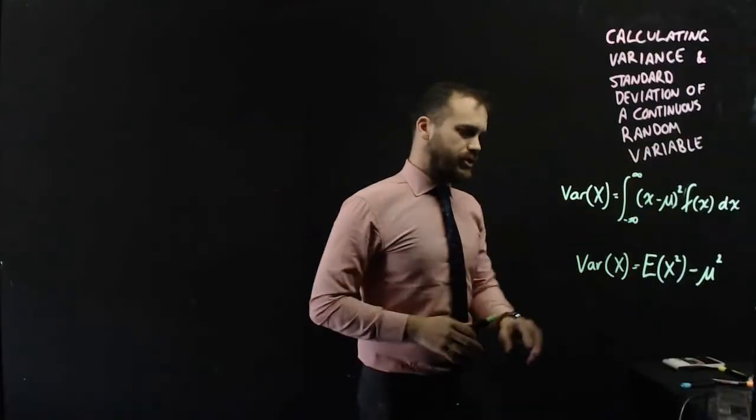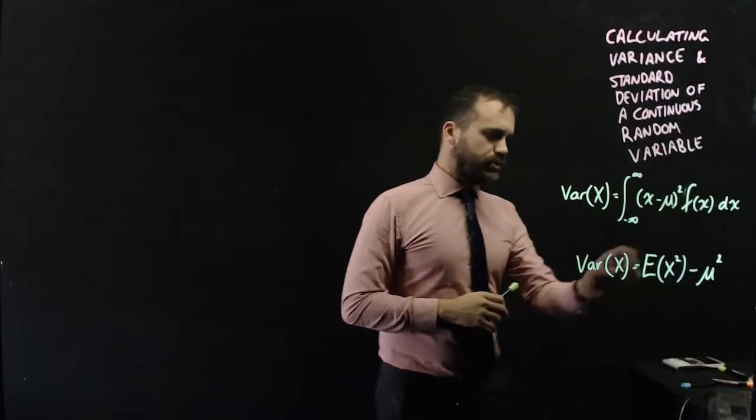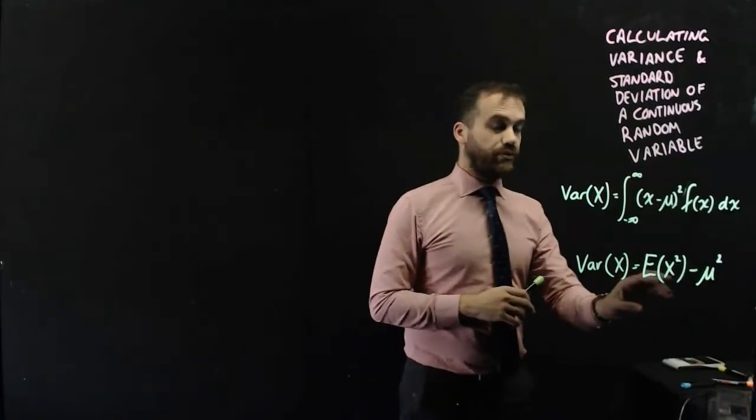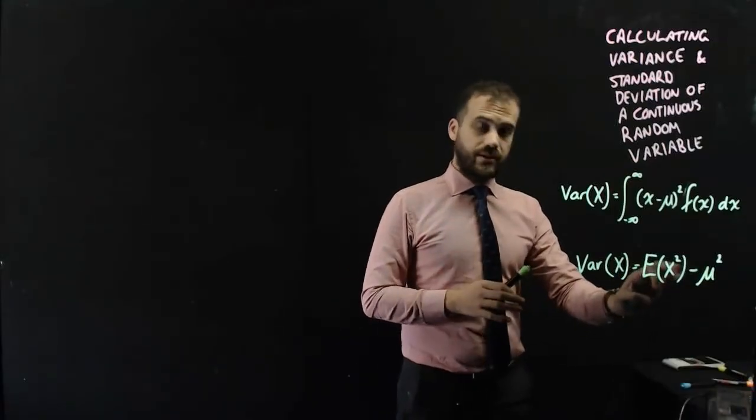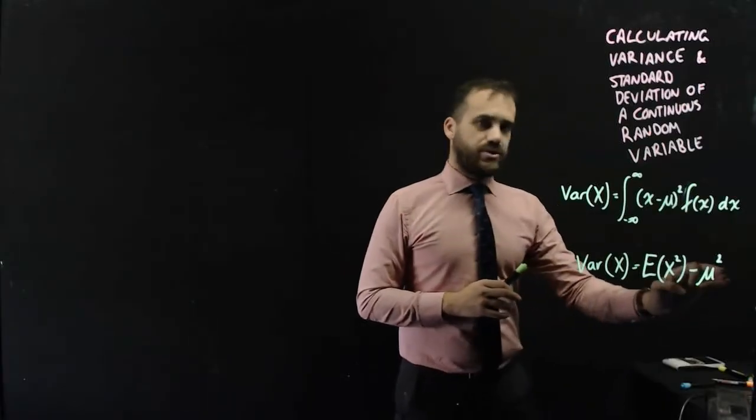Alright, separate version. The variance of x is equal to the expected value of the random variable x squared, minus the mean squared.